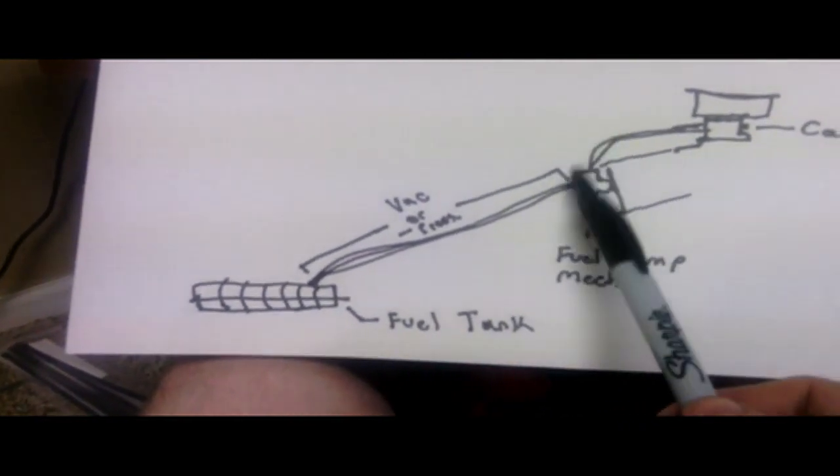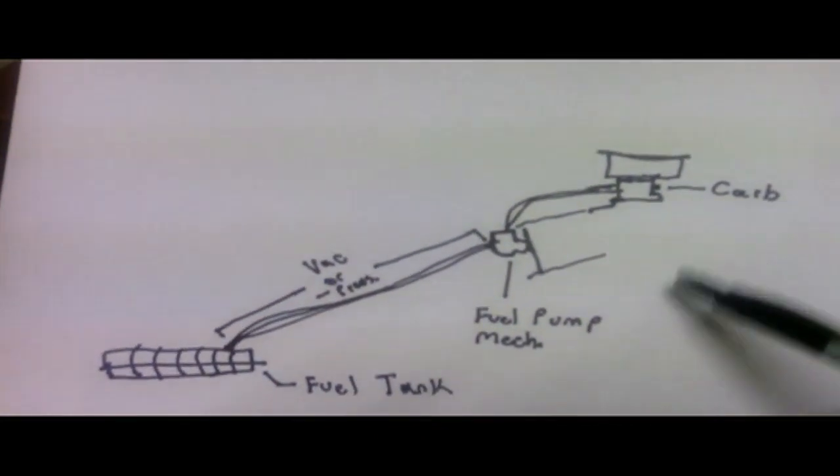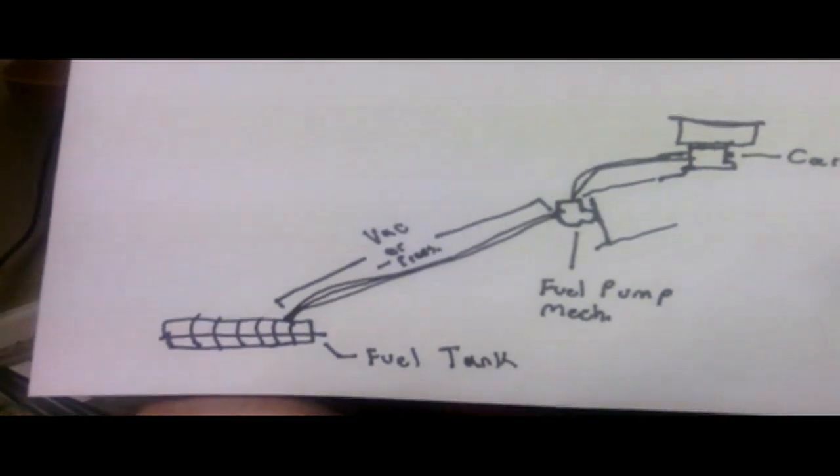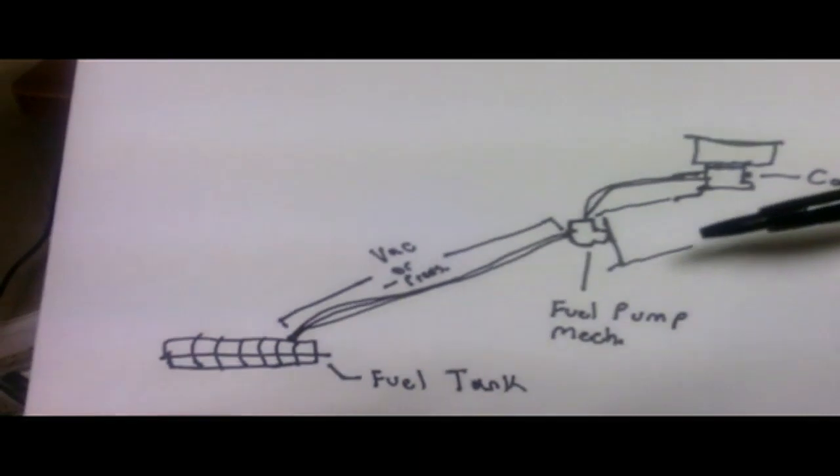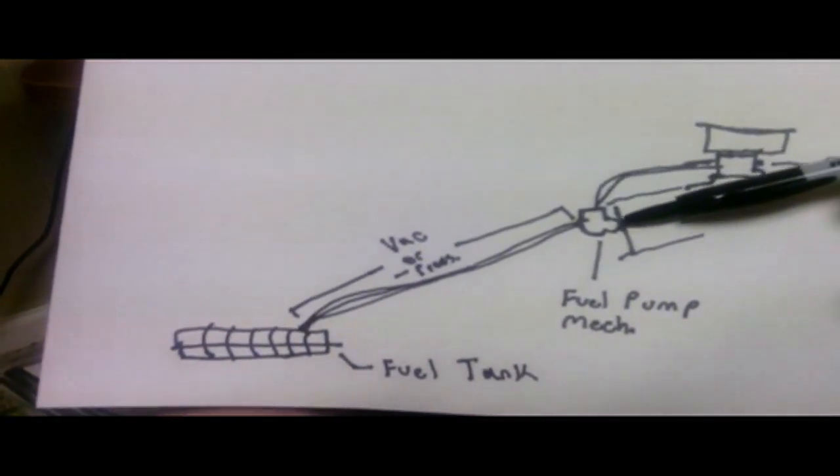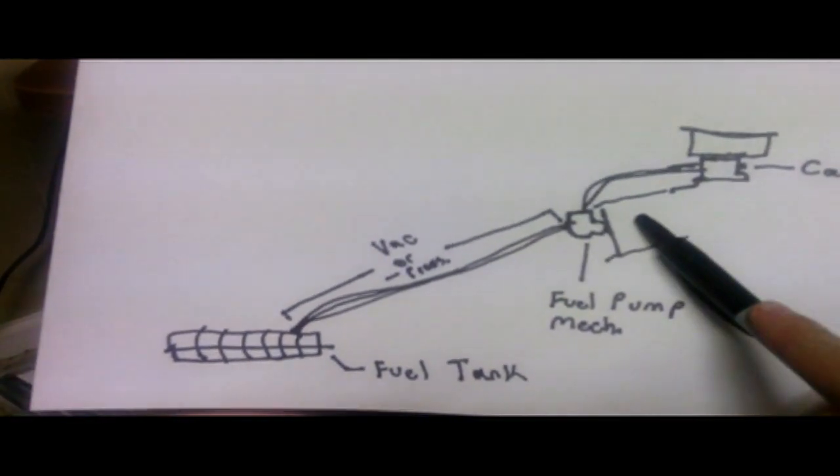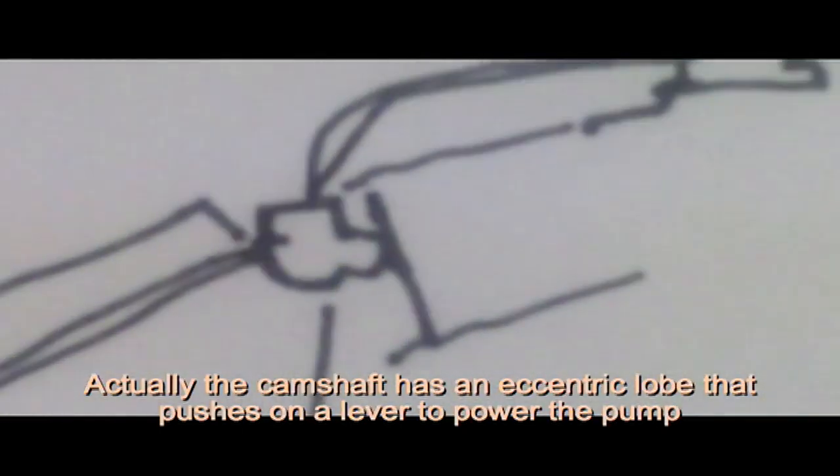The mechanical fuel pump on the carbureted engine is pretty much almost always located at the side of the engine block. The fuel pump in the carbureted systems actually is powered off of the engine itself. There's usually a rod that sticks into the fuel pump that actually goes into the engine. I believe it's usually run off of one of the rocker arms in the engine, correct me if I'm wrong. But it's usually powered that way.